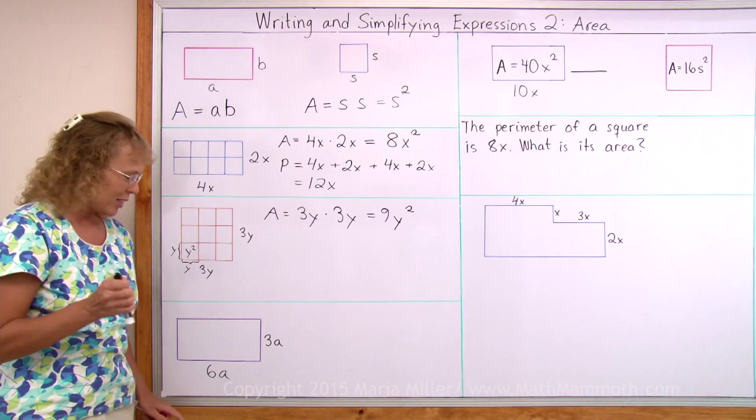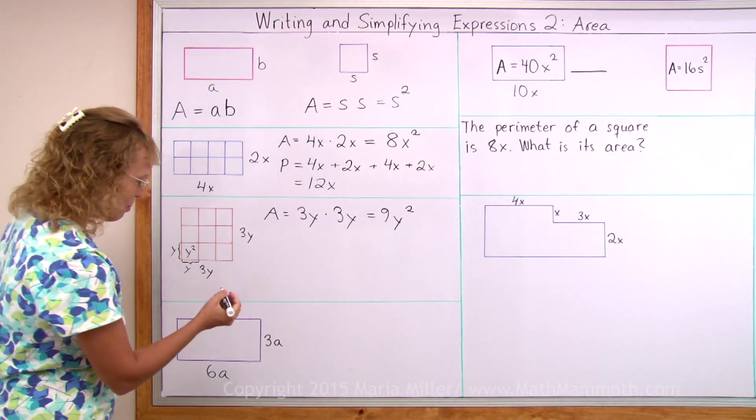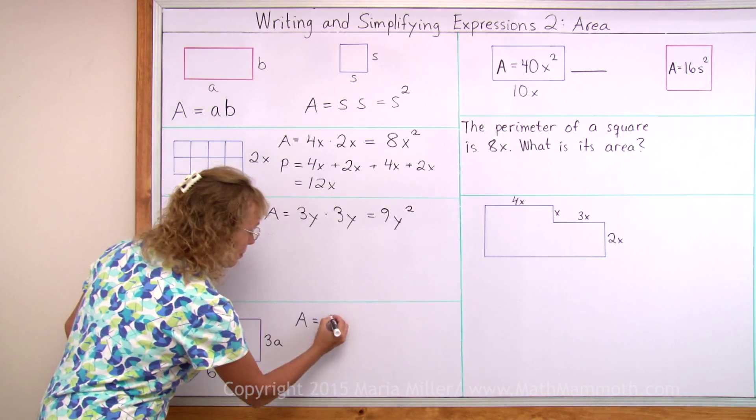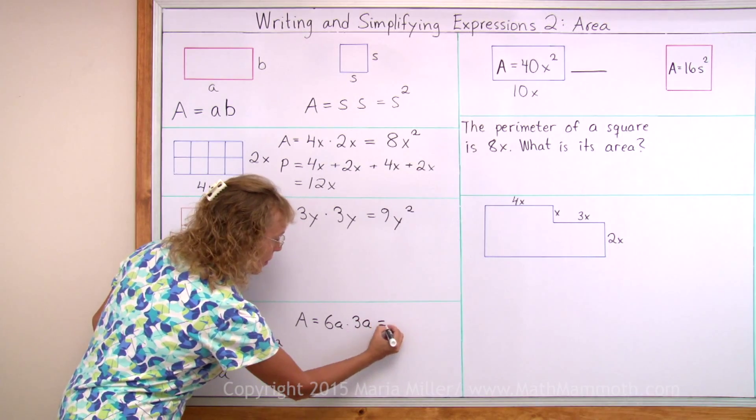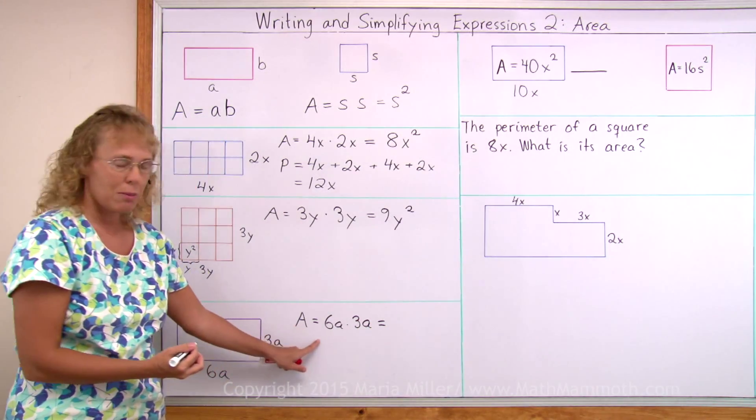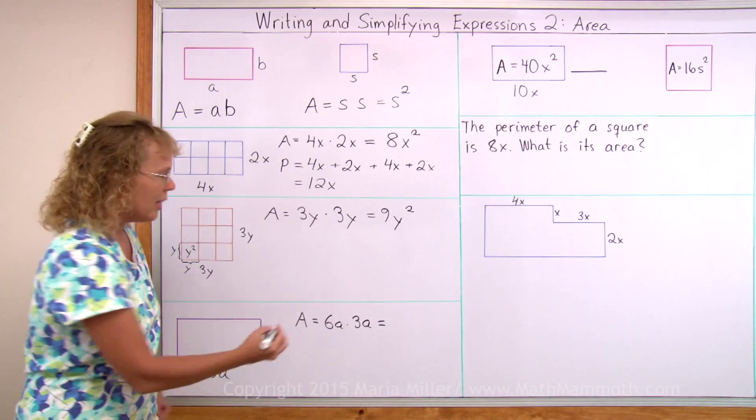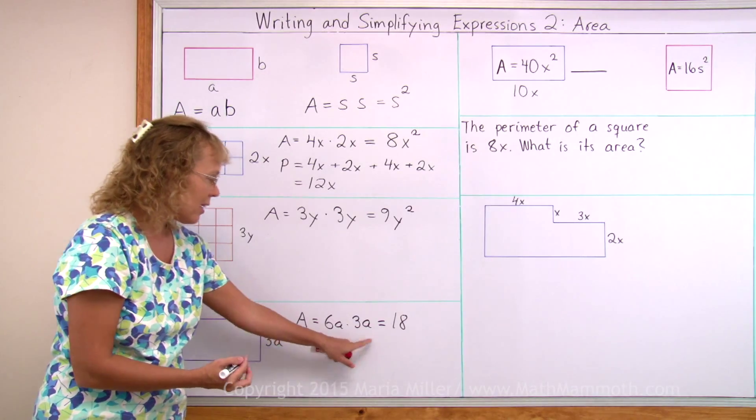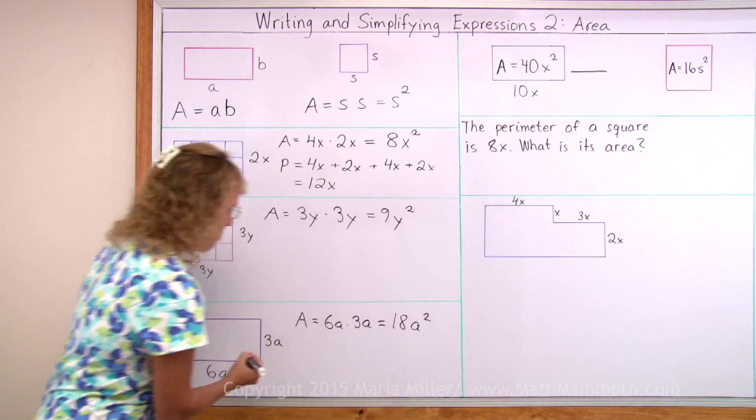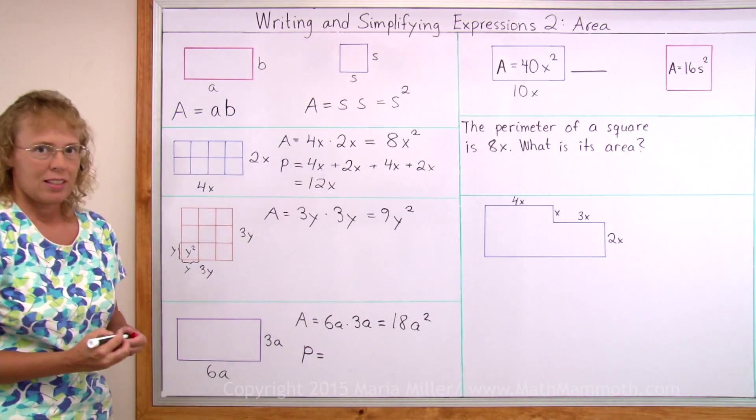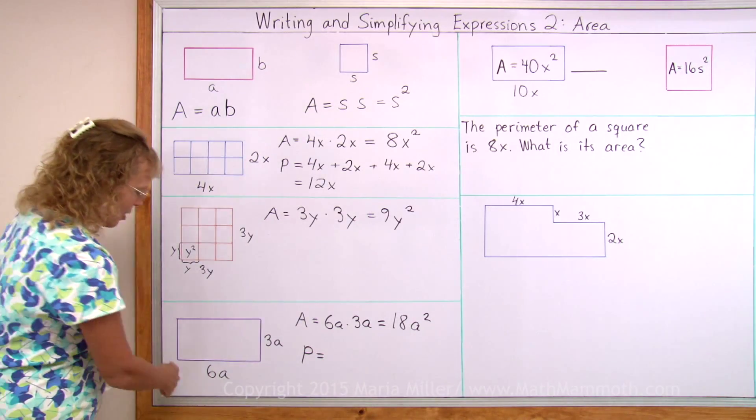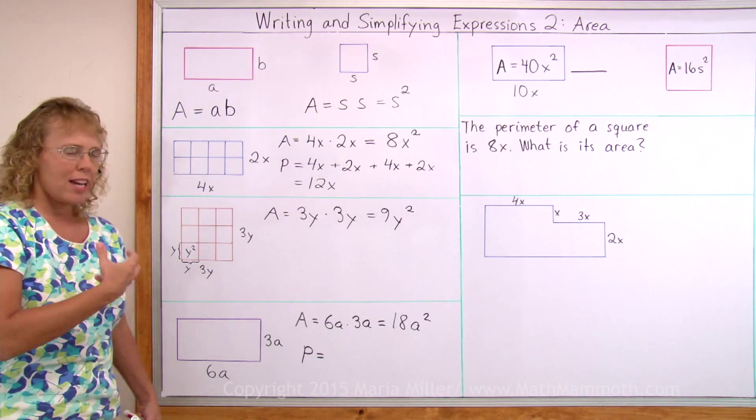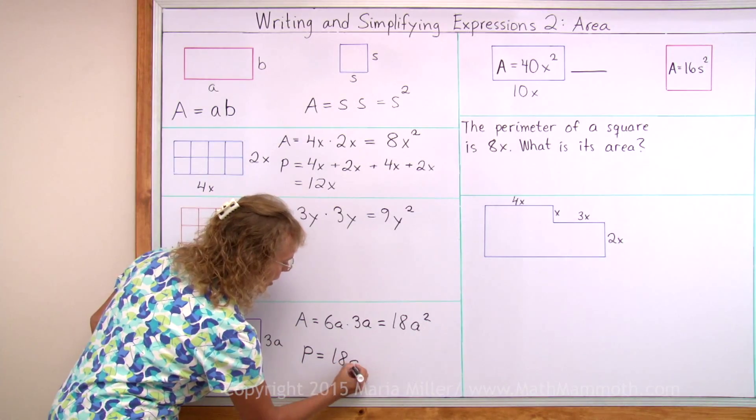The last one. This should be easy now. What is the area? And what is the perimeter? Area, multiply the side lengths. 6a times 3a. And over here, since this is all multiplication, you can multiply 6 times 3, get 18. Write that first as a coefficient. And then a times a gives you a squared. And then perimeter, you add. Go all the way around and add. 6a, 3a, 6a, 3a. So there's a total of 18a. No squaring here.